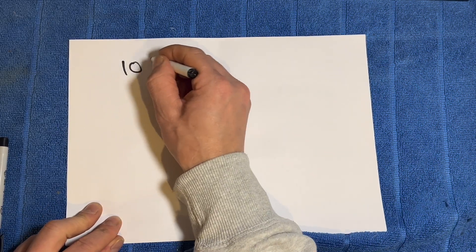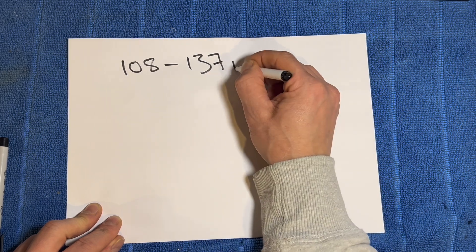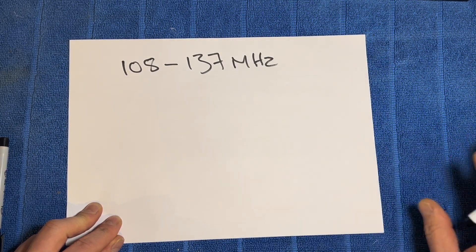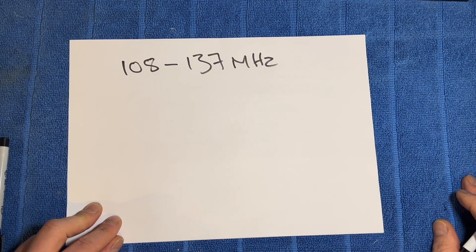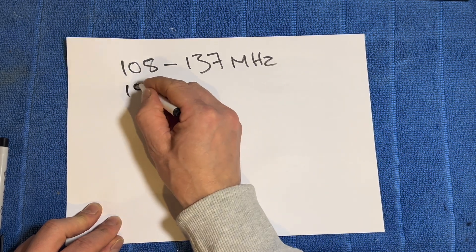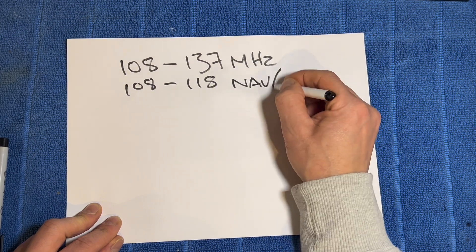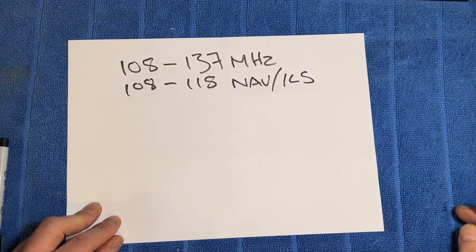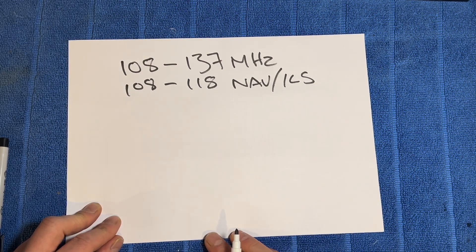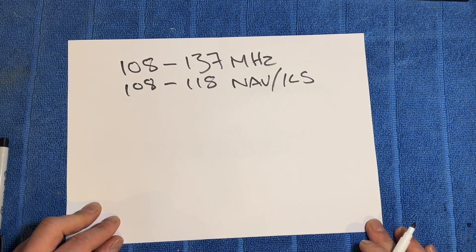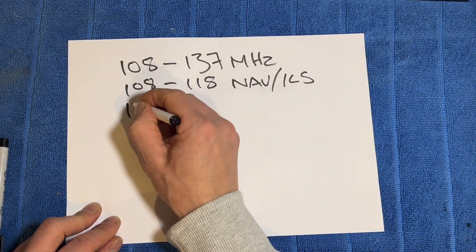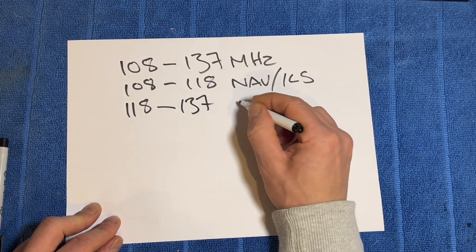Let's have a look at the airband itself. Airband is between 108 and 137 megahertz. This is fairly universal because aircraft travel all over the world and they all abide by the same rules. The first 10 megahertz — so 108 to 118 — tends to be things like navigation, instrument landing systems, and beacons. It's not actually voice between 108 and 118 megahertz; it tends to be signals sent to the aircraft to assist with navigation and landing. From 118 up to 137 is where we find the voice.